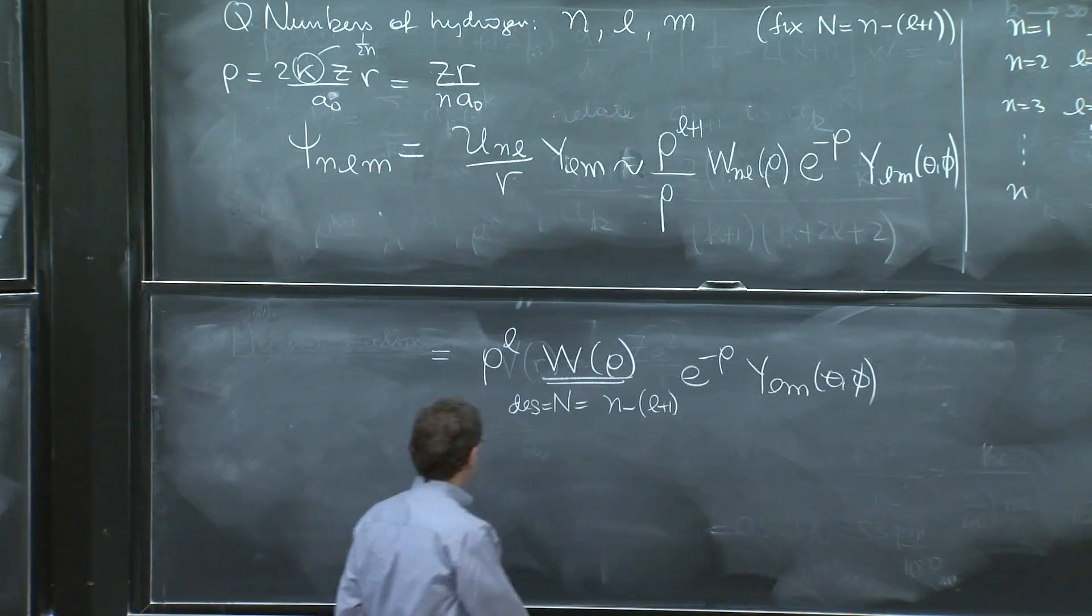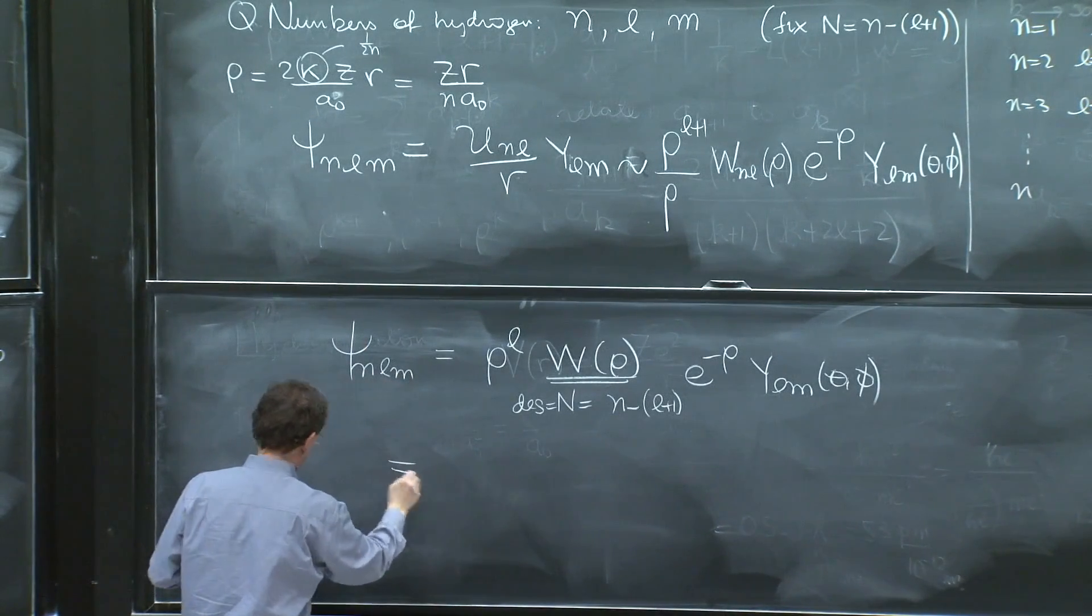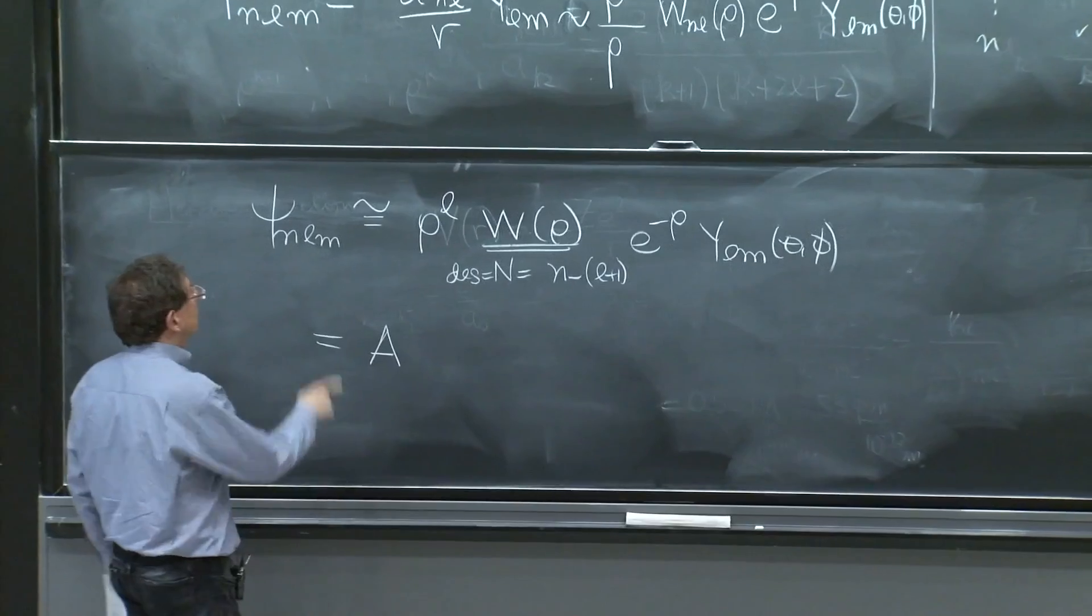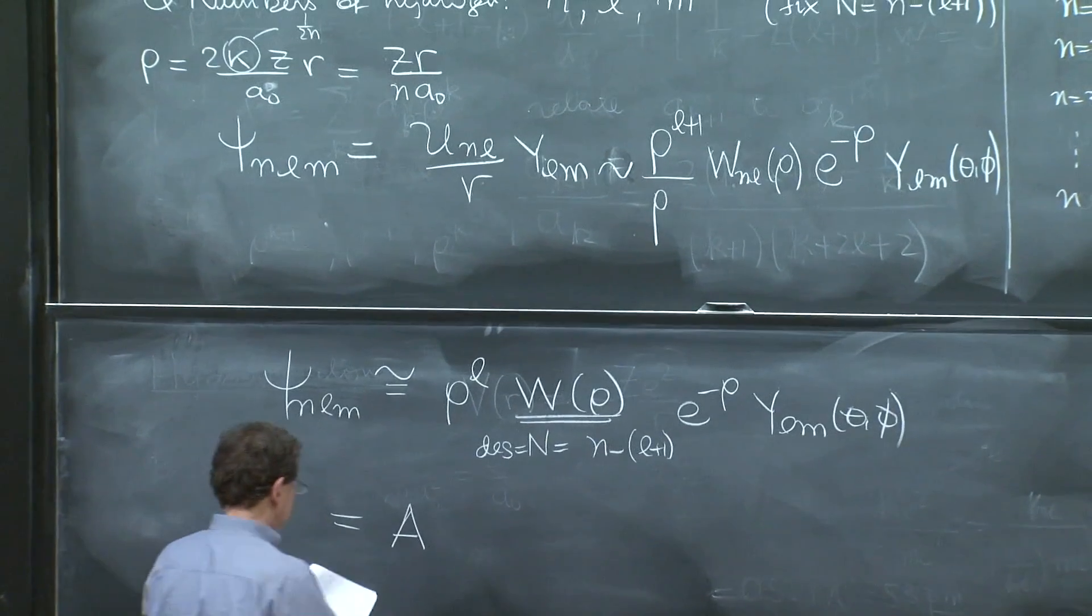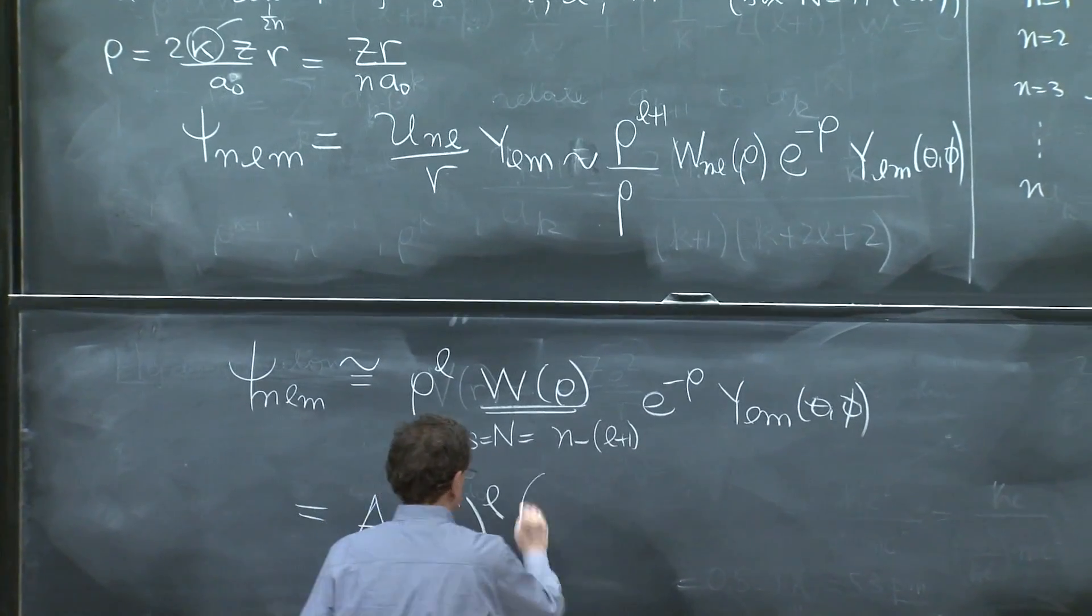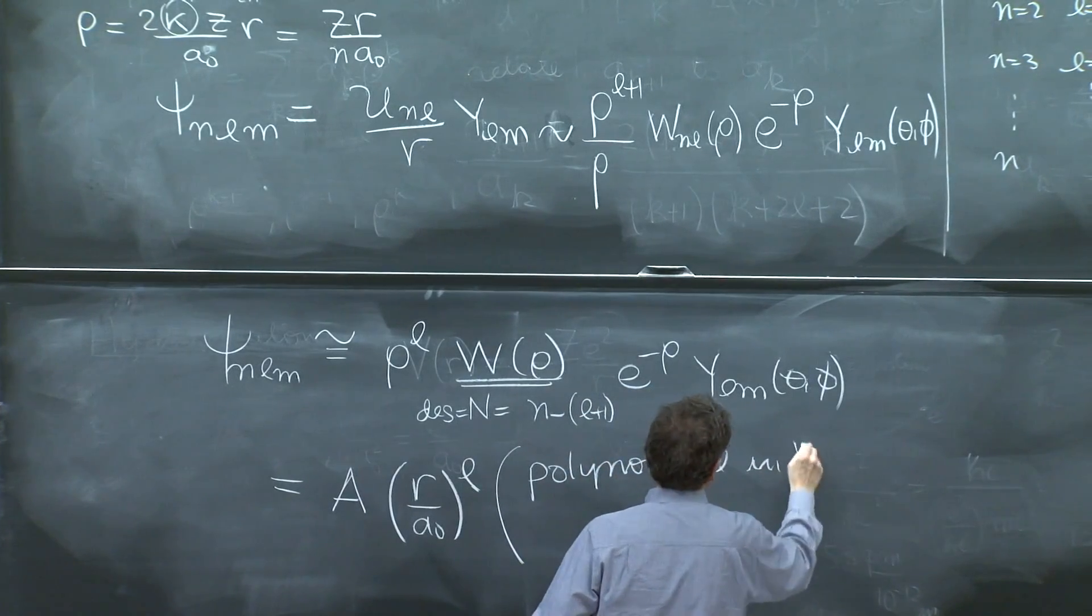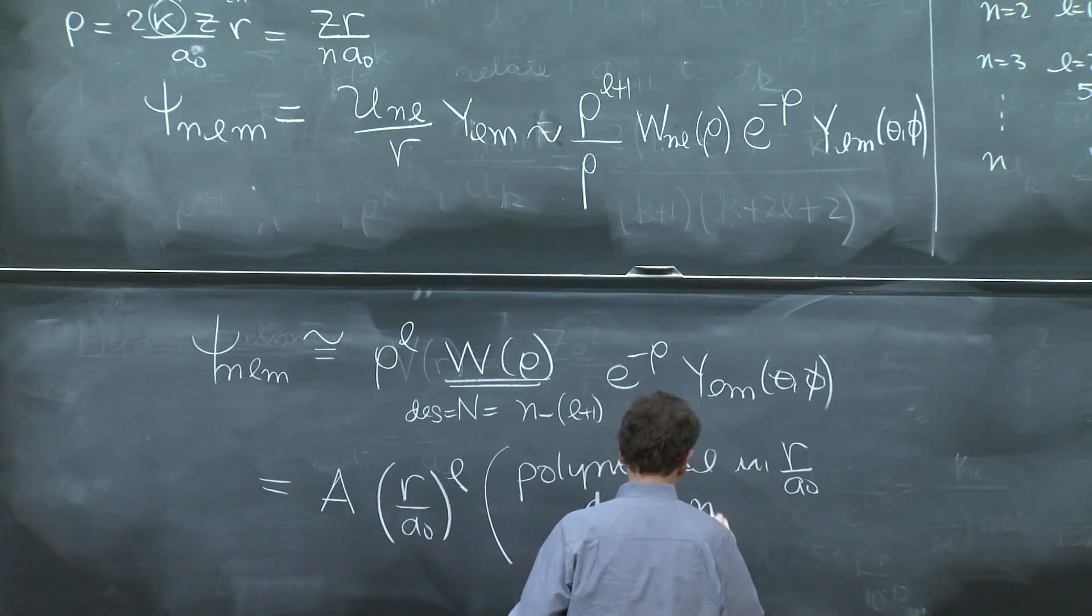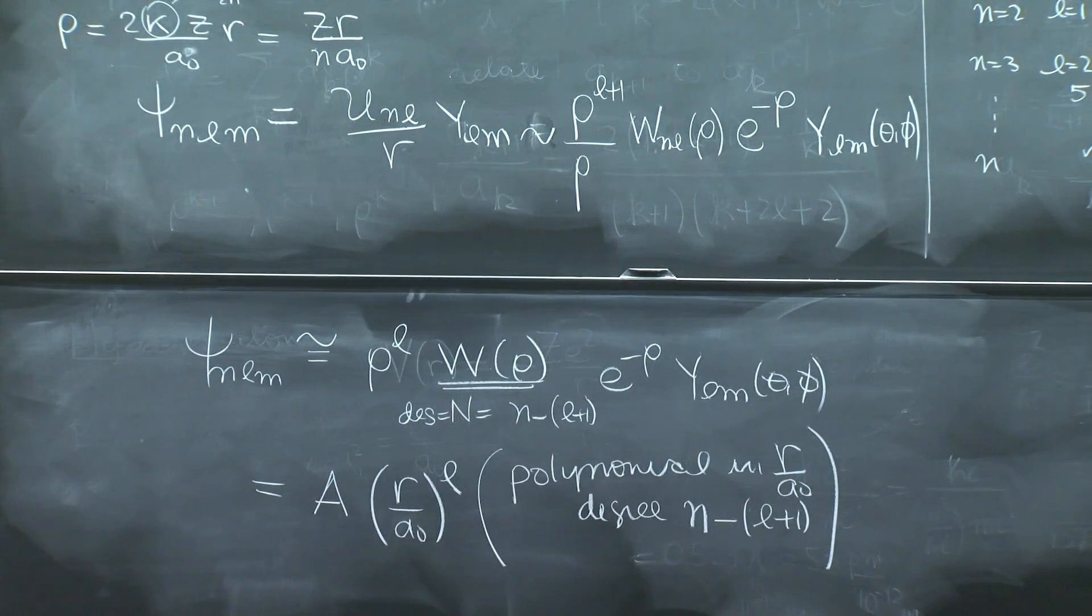It's important for you to see the whole solution. This is the whole solution of the hydrogen atom. I'll write it in one more way. A constant, because this is similar. Rho, well, rho is, in terms of units, at least has r over a0 to the l. Here it is, a polynomial in r over a0 of degree, e little n minus l plus 1. And this polynomial, we could make a whole study of it.